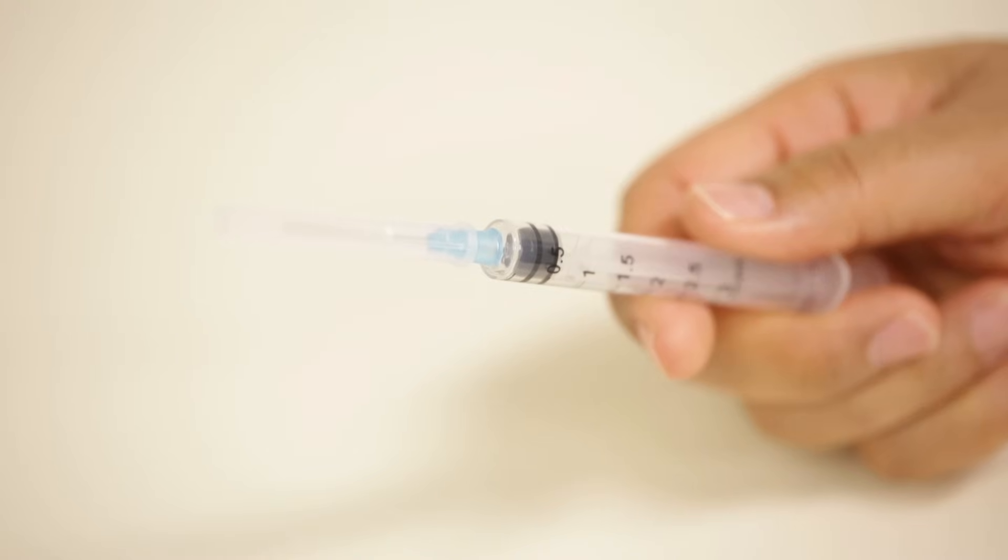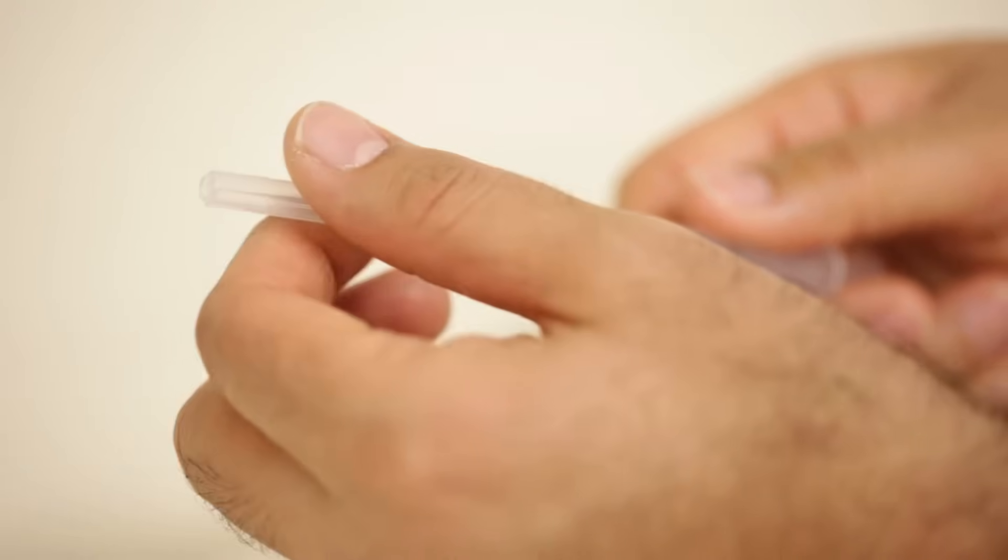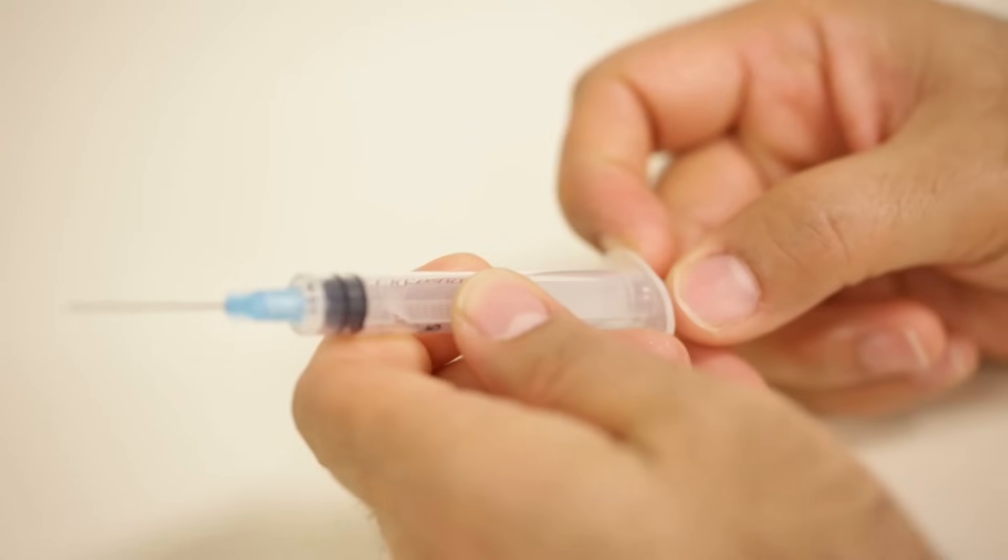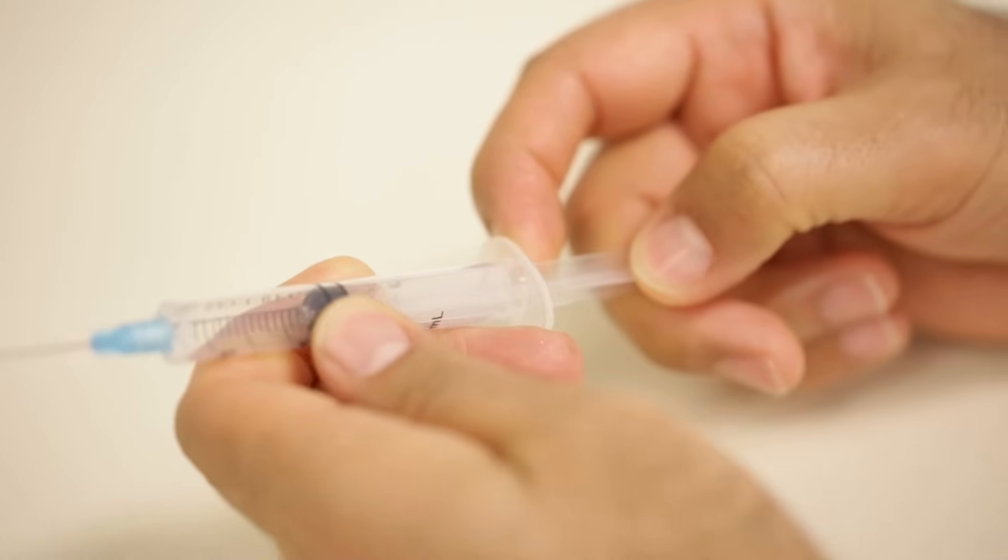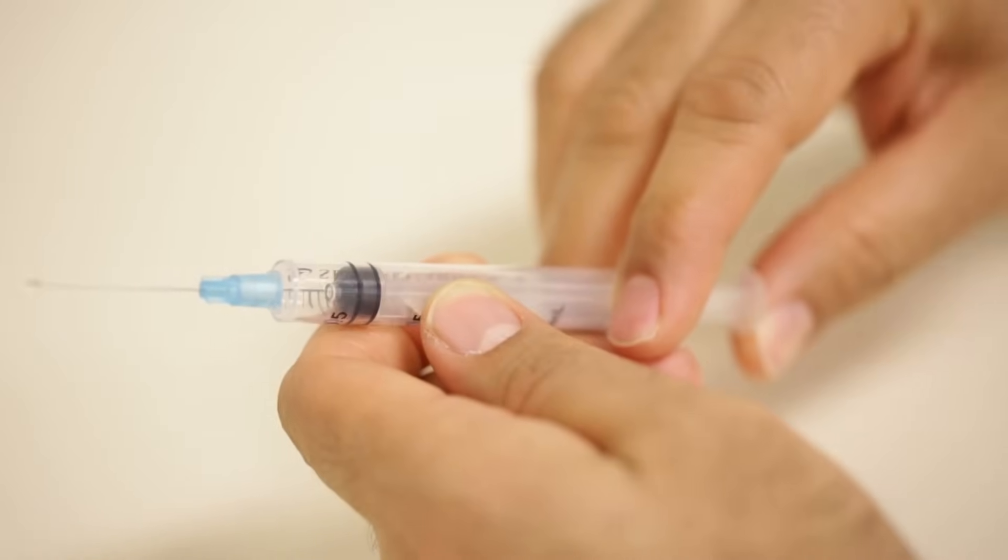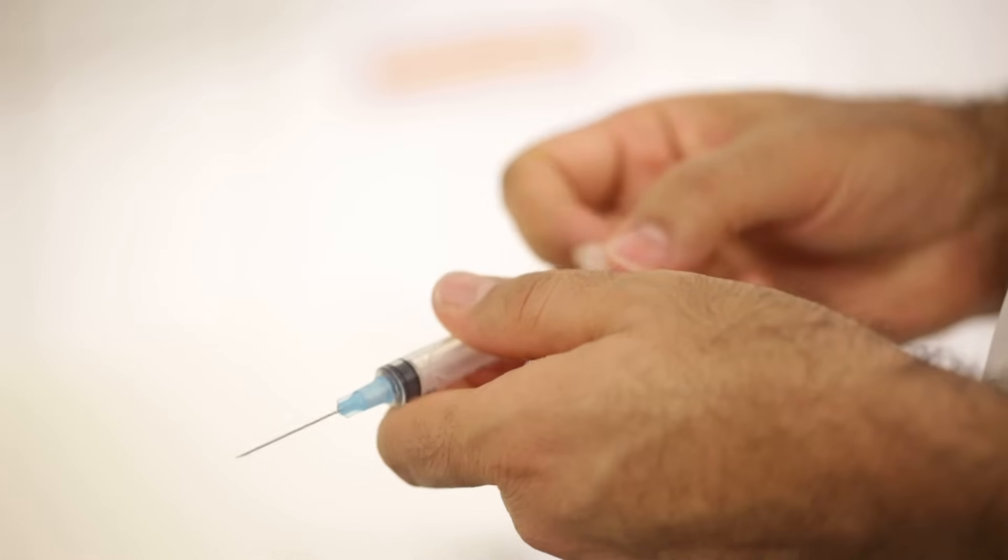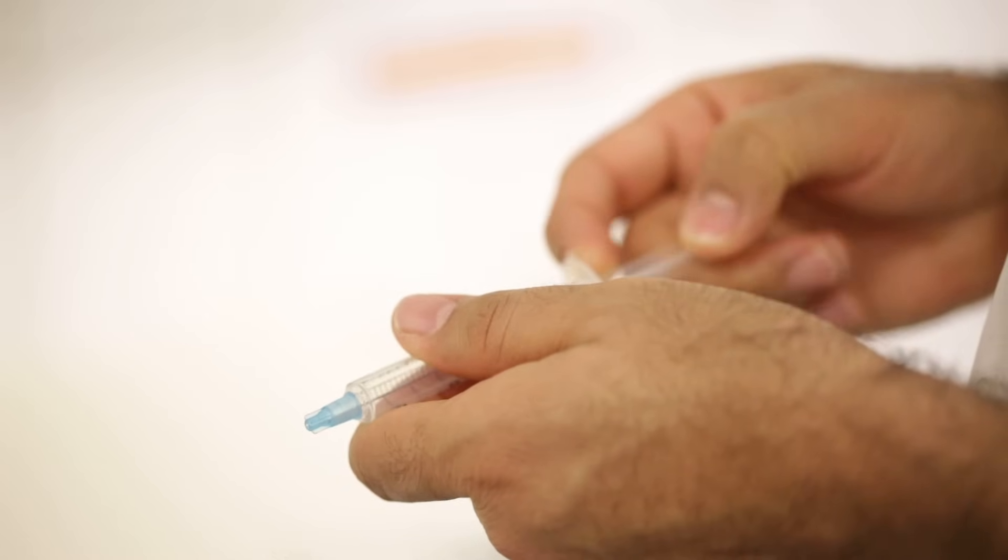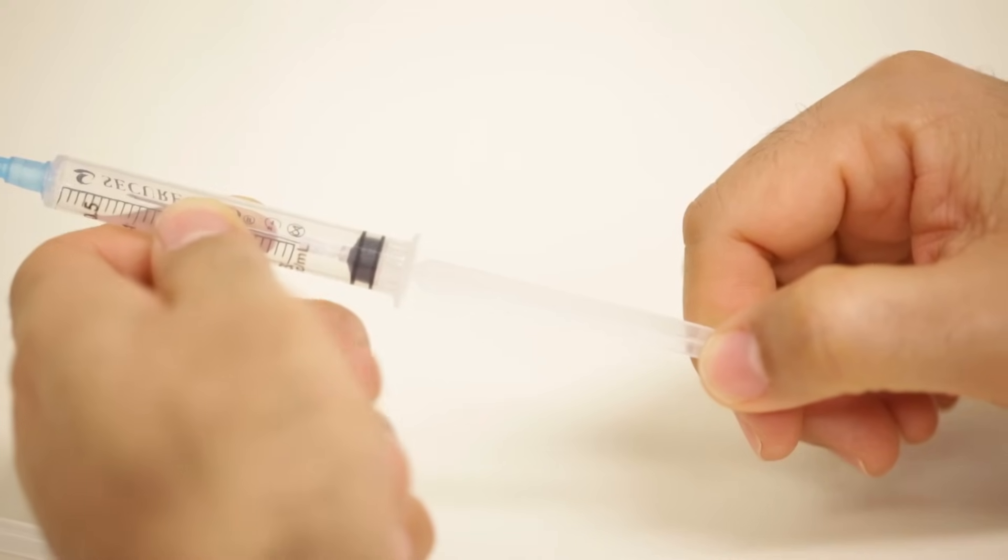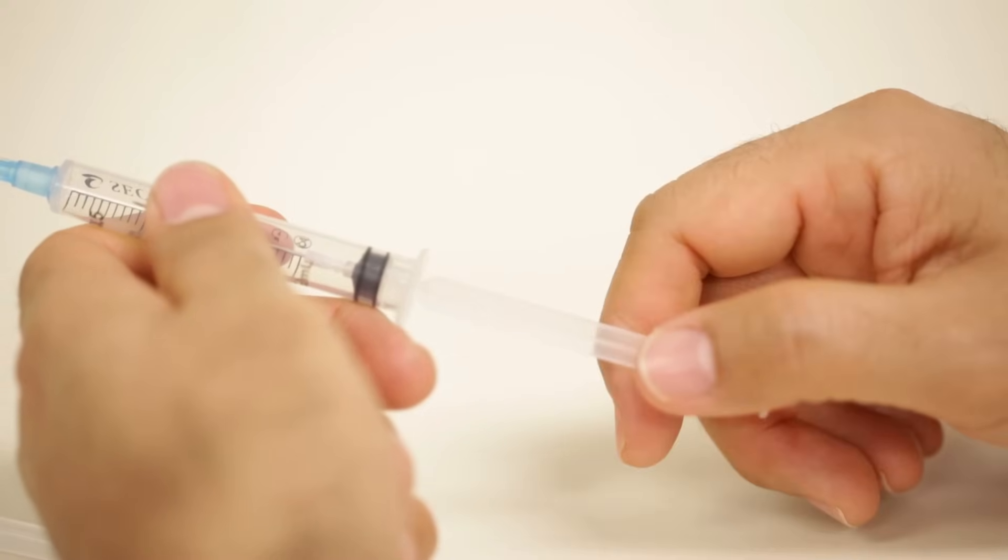This syringe has reuse prevention and sharps injury protection features. After the injection, push the plunger forward until you hear a click, then pull back to retract the needle inside the barrel. Continue to pull, applying force to break the plunger.